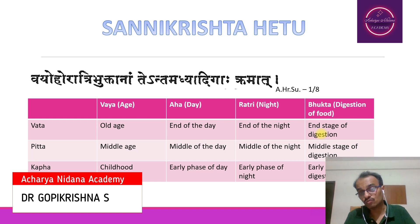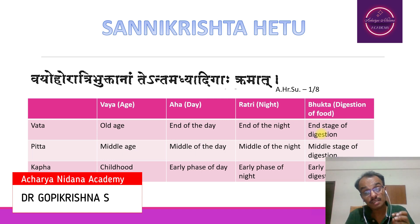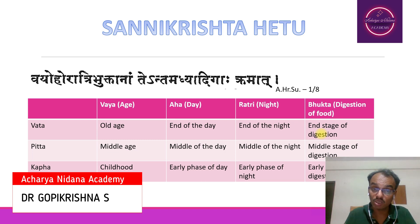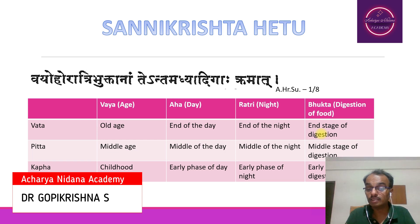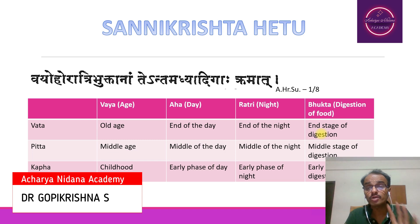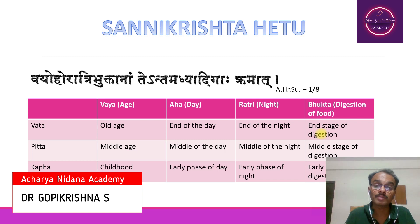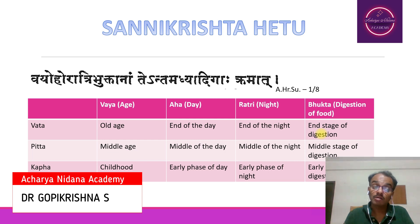As far as Ratri or night time is concerned, Vata Dosha is dominant in the end stage of the night, whereas Pitta Dosha is dominant in midnight, whereas Kapha Dosha is dominant in the early phase of the night time. As far as the digestion of food is concerned, Vata Dosha is dominant in the end stage, Pitta Dosha in the middle stage, and Kapha Dosha in the early phase. In other words, Vata Dosha dominance can be observed in the Pakvashaya, Kapha Dosha dominance in the Amashaya, whereas Pitta Dosha dominance is seen in between the Amashaya and Pakvashaya.